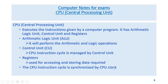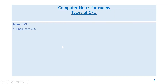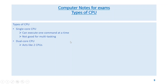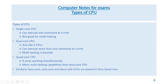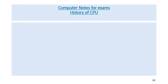The CPU instruction cycle is synchronized by the CPU clock. Types of CPU: single core CPU can execute one command at a time and is not good for multitasking. Dual core CPU acts like two CPUs and can execute more than one command at a time, so multitasking is possible. Quad core CPU has four cores working simultaneously. Hexa core, octa core, and deca core CPUs are more powerful than quad core.